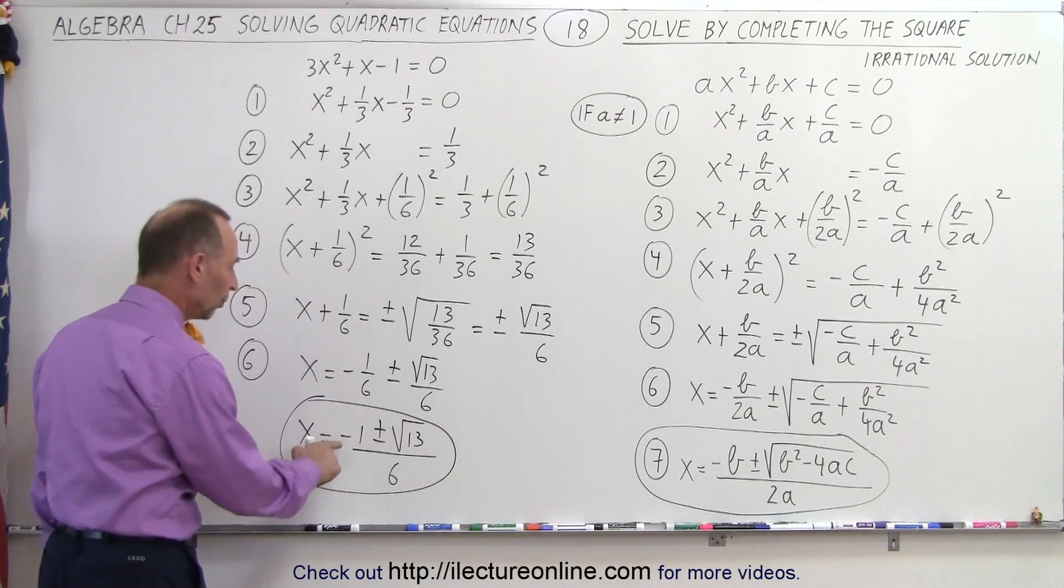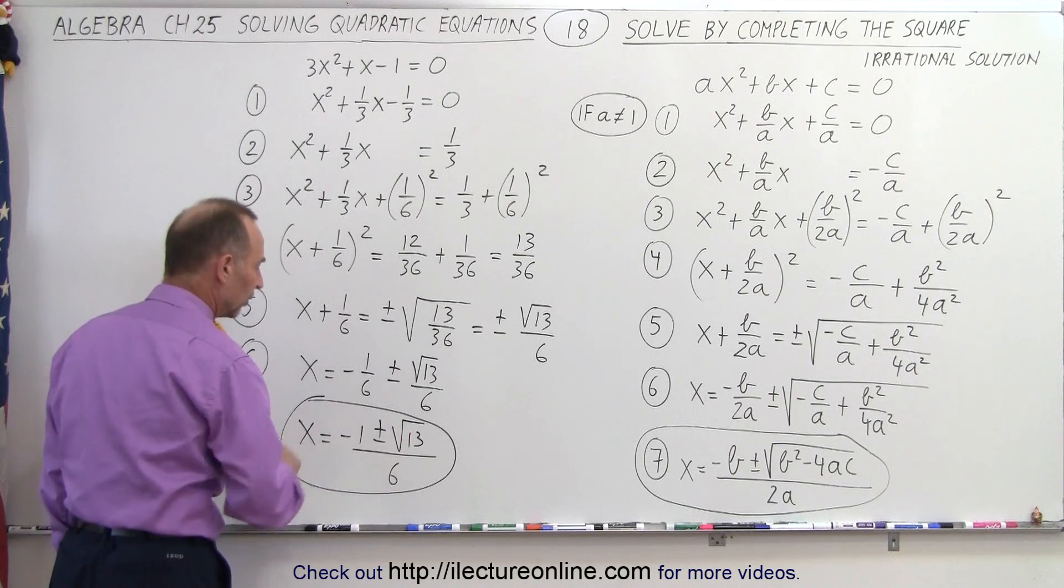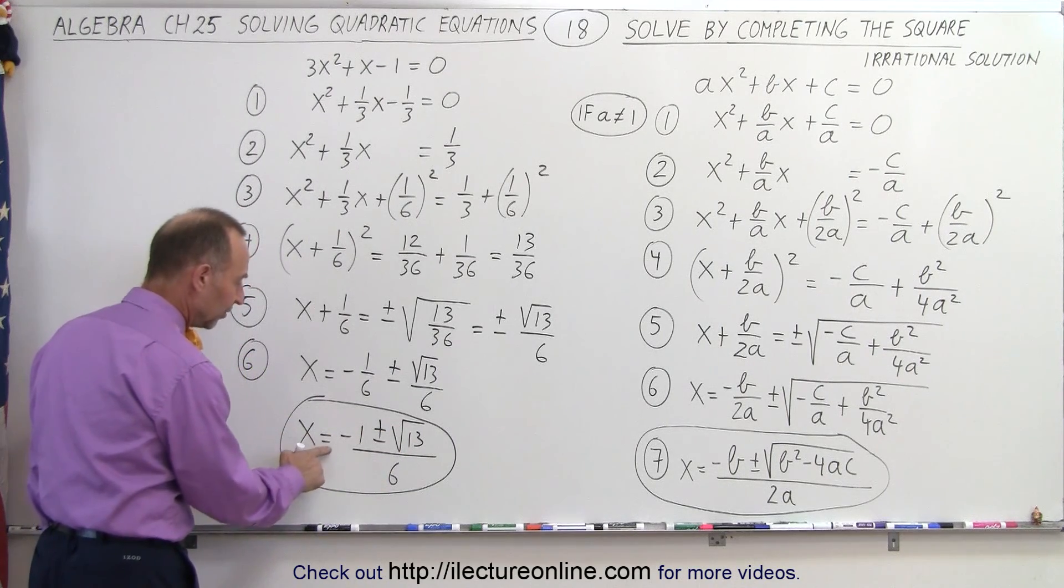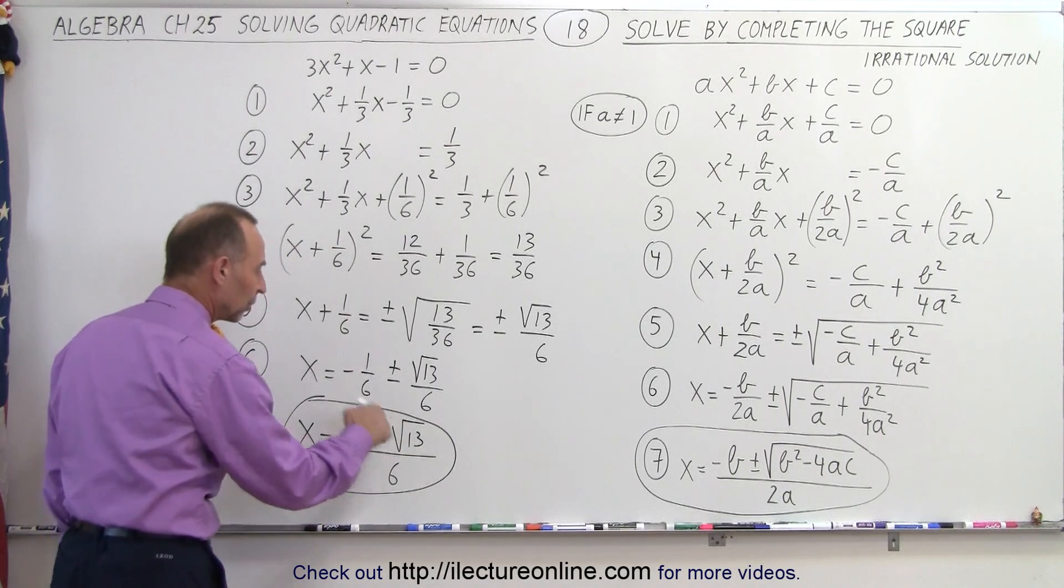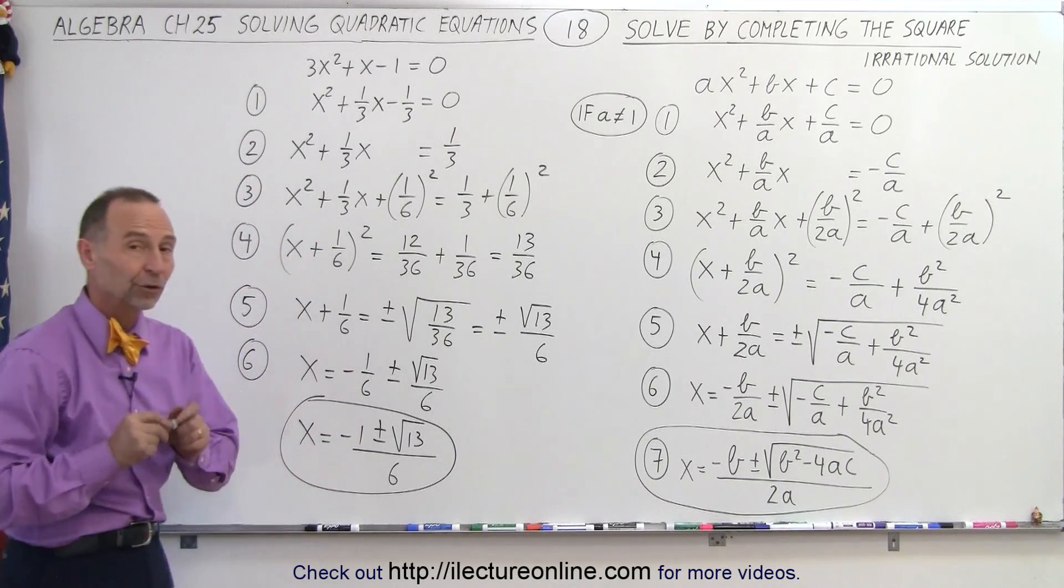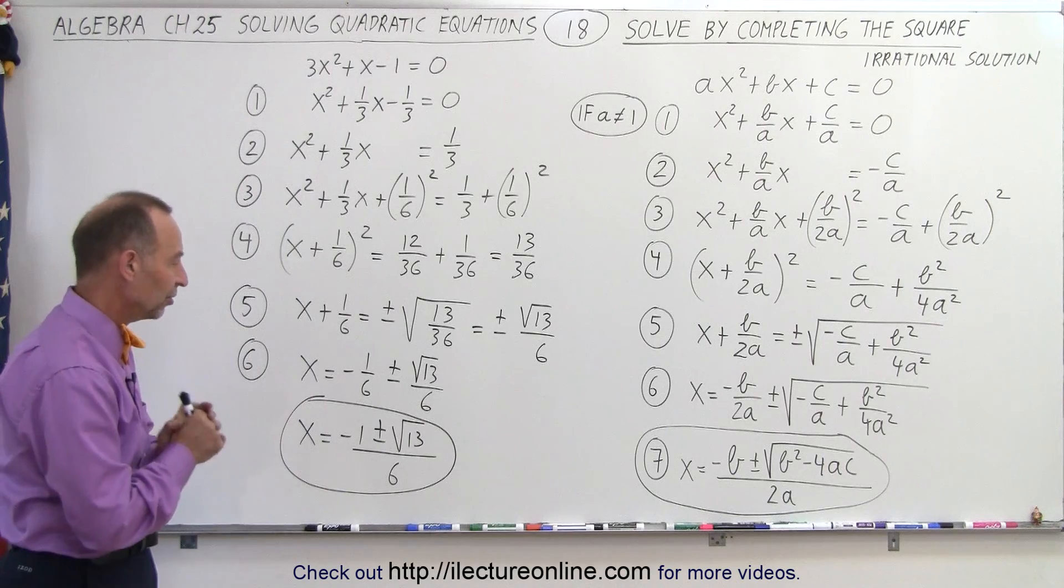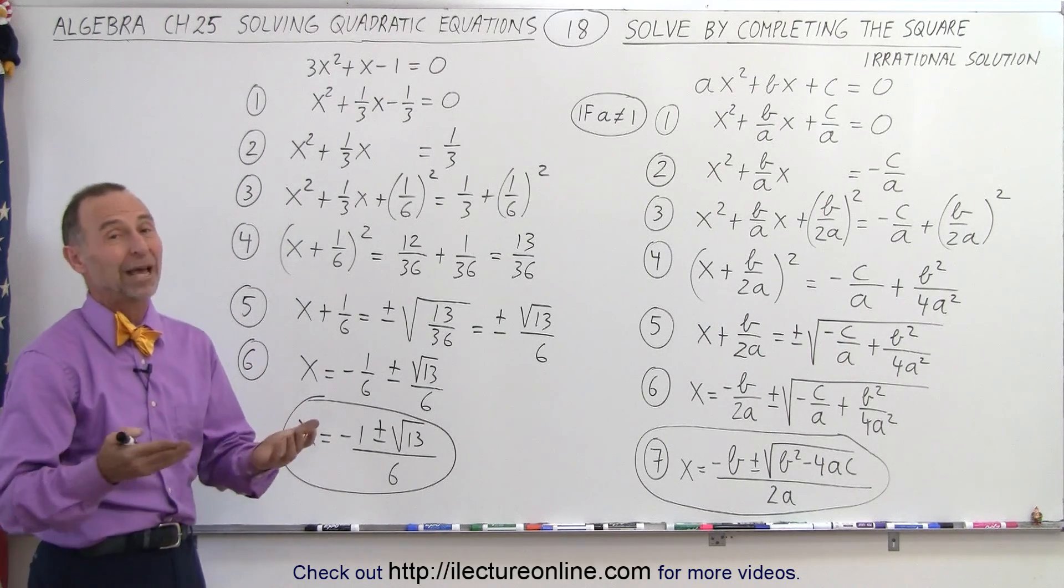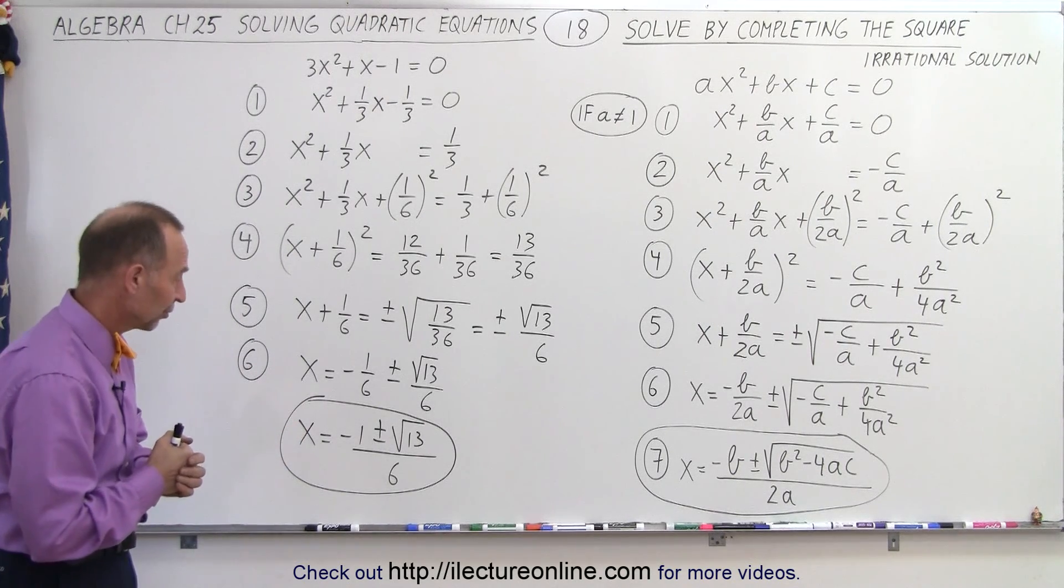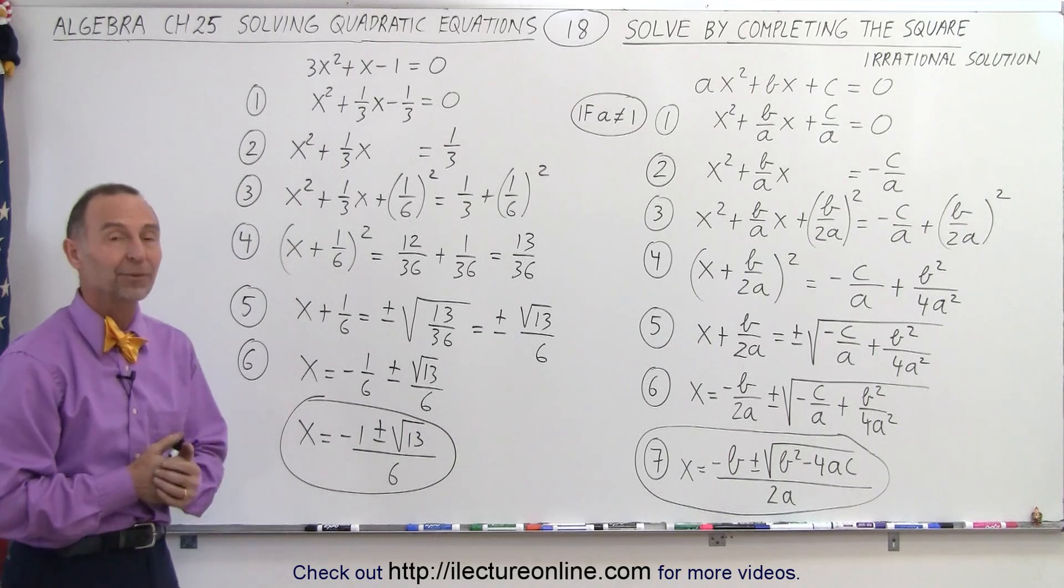We have two possible answers. One is minus 1 plus the square root of 13 over 6, and the other one is x is equal to minus 1 minus the square root of 13 over 6. But those are the two solutions to our original quadratic equation. And notice we end up with a radical, so therefore we have the irrational solution. And that is how it's done.